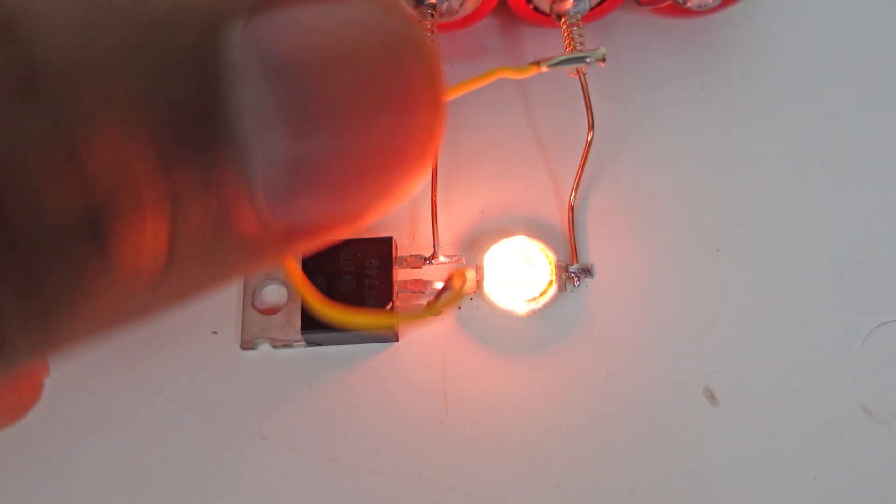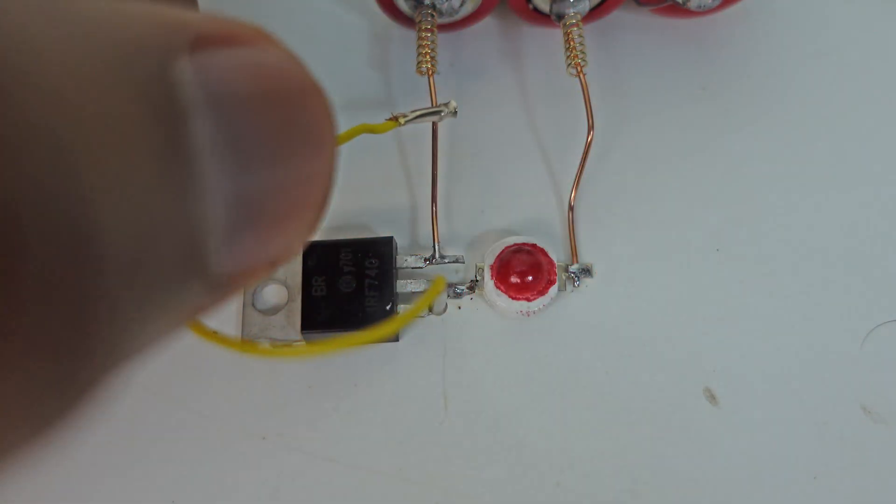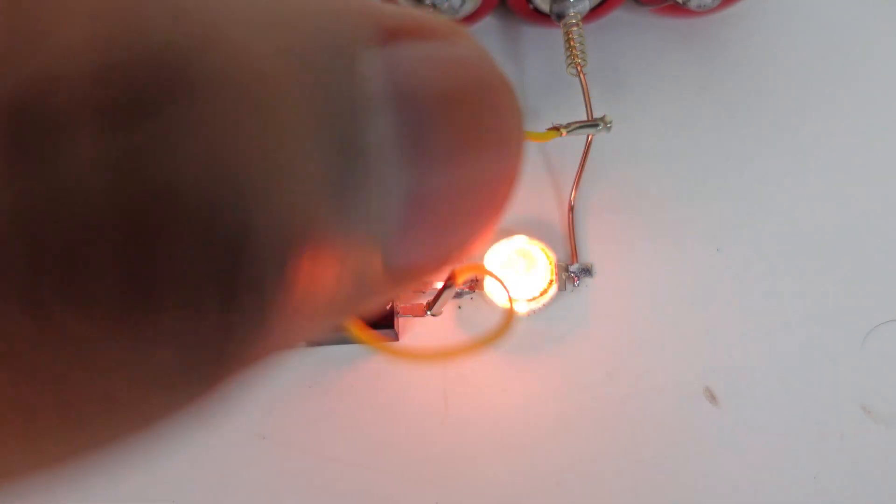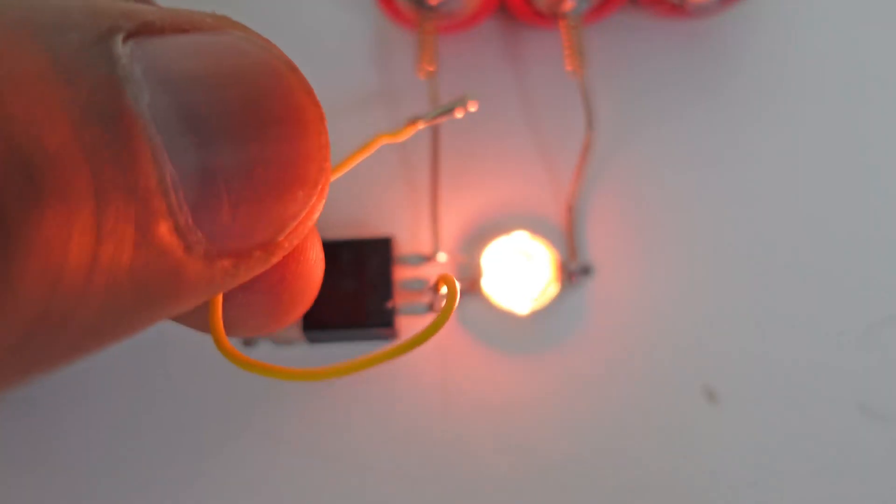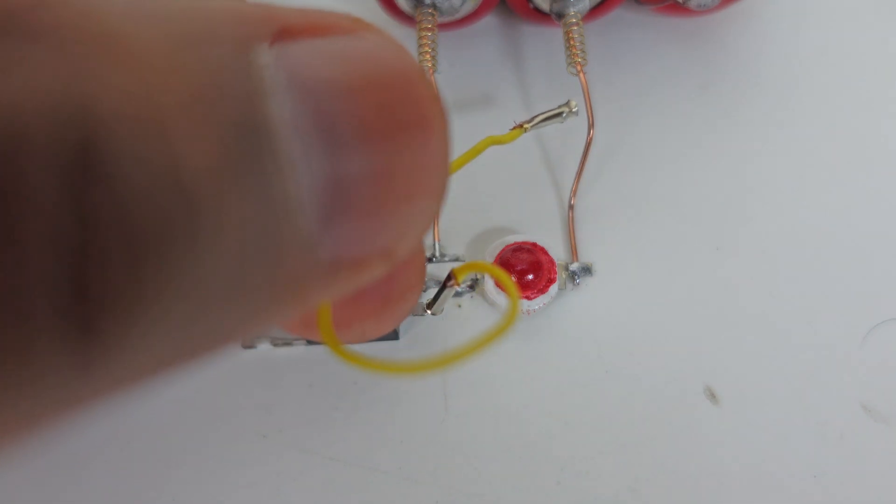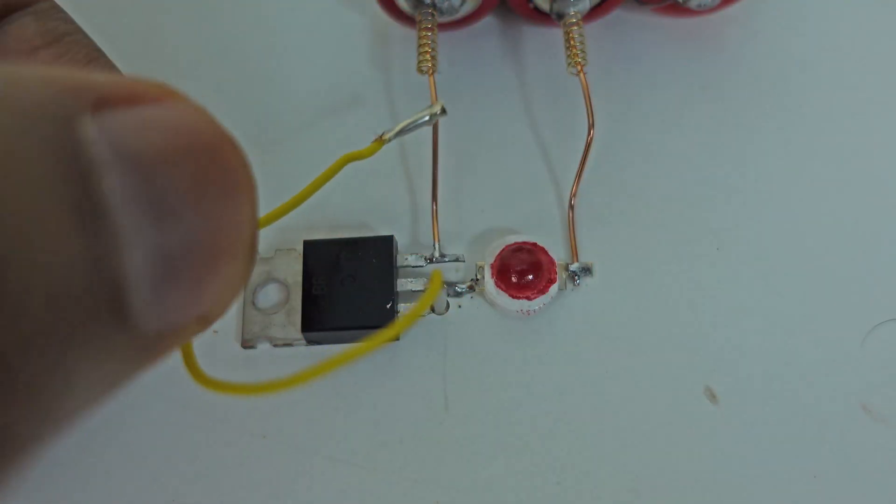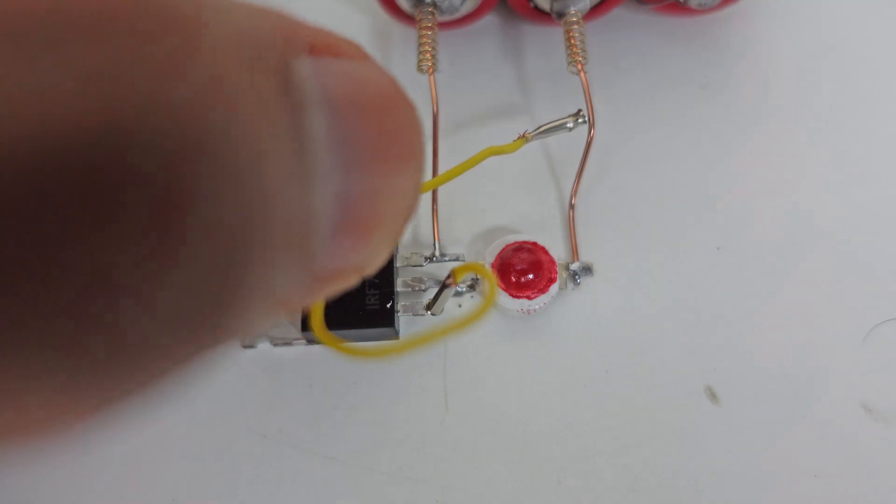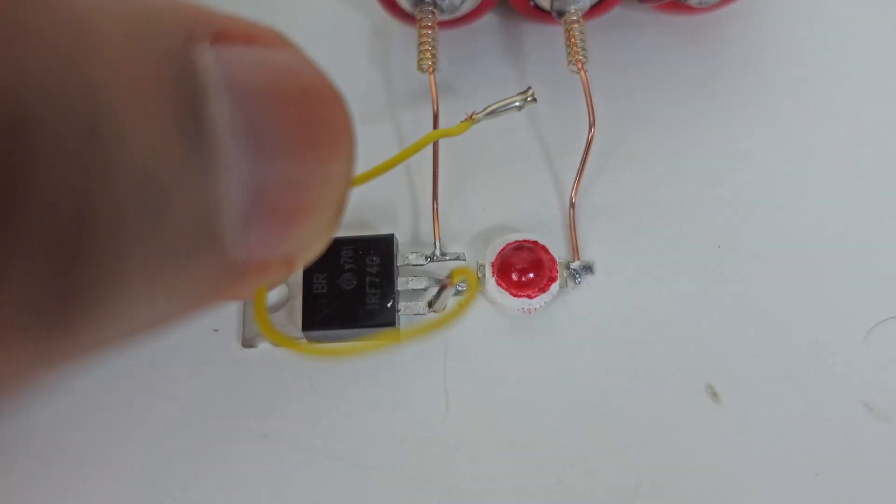No matter how many times you repeat this, the result remains the same. Once connected to the positive, the switch is permanently on. And when connected to the negative, the switch is permanently off. And this point is very interesting that it does not have any mechanical parts. This switch works in a solid state.